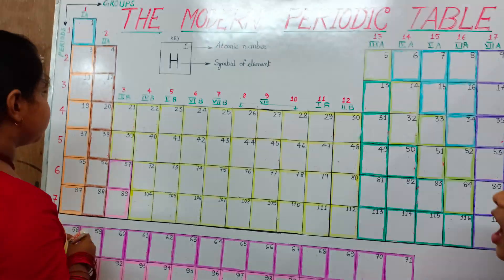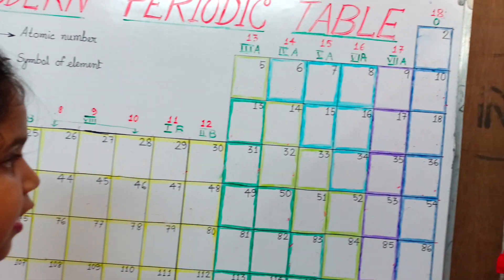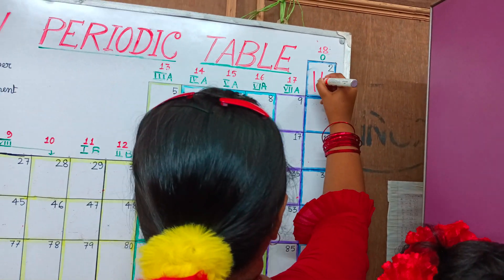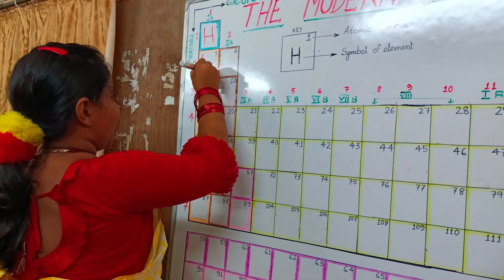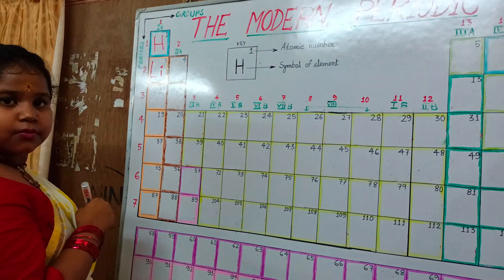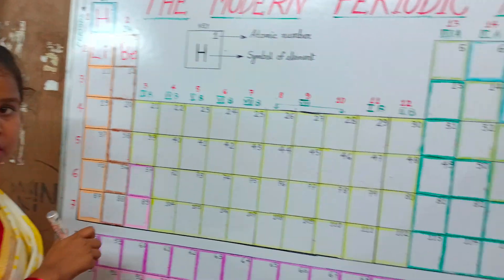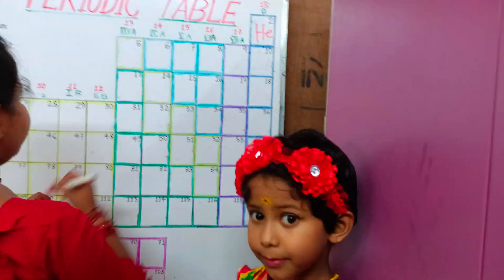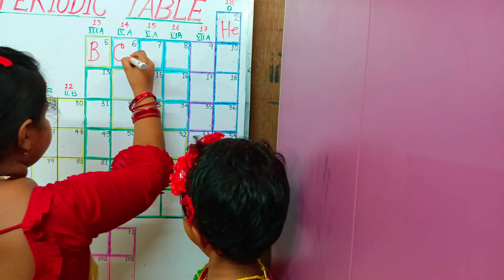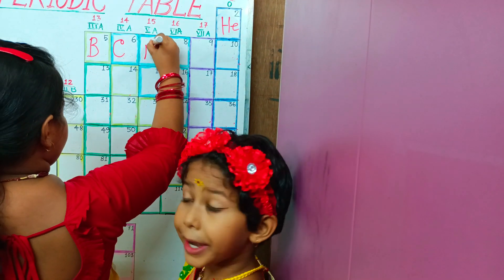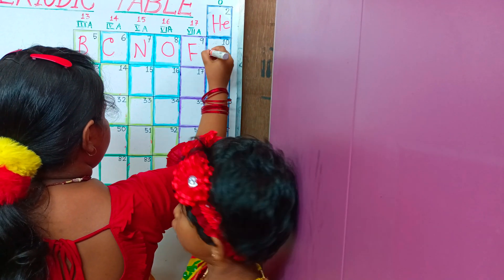Let's start. 1 hydrogen, H. 2 helium, He. 3 lithium, Li. 4 beryllium, Be. 5 boron, B. 6 carbon, C. 7 nitrogen, N. 8 oxygen, O. 9 fluorine, F. 10 neon, Ne.